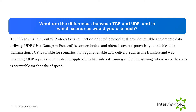What are the differences between TCP and UDP, and in which scenarios would you use each? TCP, Transmission Control Protocol, is a connection-oriented protocol that provides reliable and ordered data delivery. UDP, User Datagram Protocol, is connectionless and offers faster but potentially unreliable data transmission. TCP is suitable for scenarios that require reliable data delivery, such as file transfers and web browsing. UDP is preferred in real-time applications like video streaming and online gaming, where some data loss is acceptable for the sake of speed.